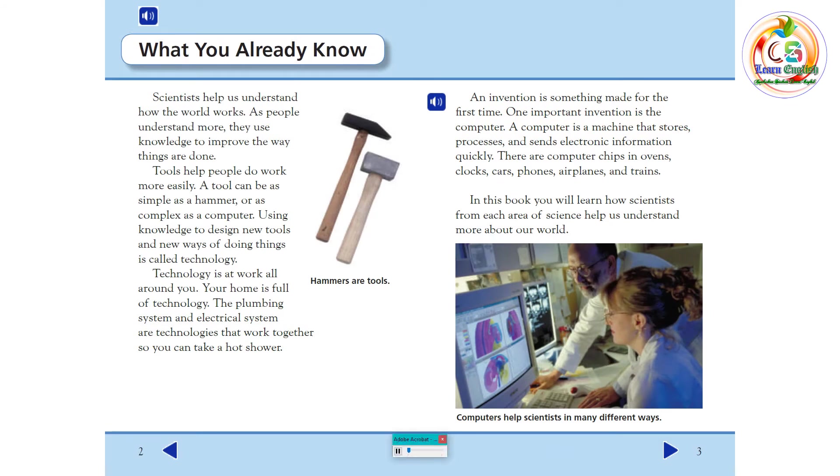What You Already Know. Scientists help us understand how the world works. As people understand more, they use knowledge to improve the way things are done. Tools help people do work more easily. A tool can be as simple as a hammer or as complex as a computer. Using knowledge to design new tools and new ways of doing things is called technology. Technology is at work all around you. Your home is full of technology. The plumbing system and electrical system are technologies that work together so you can take a hot shower.